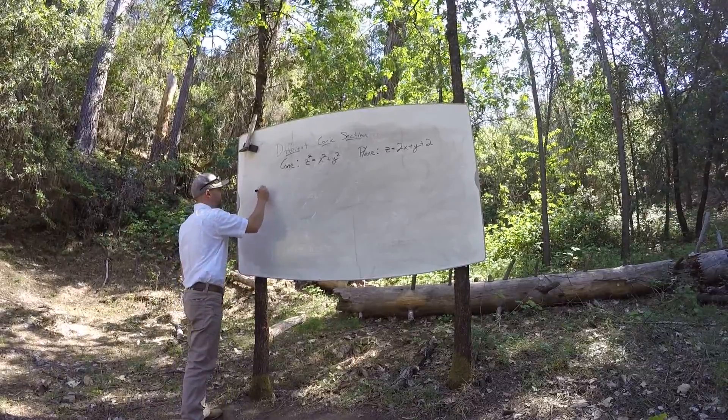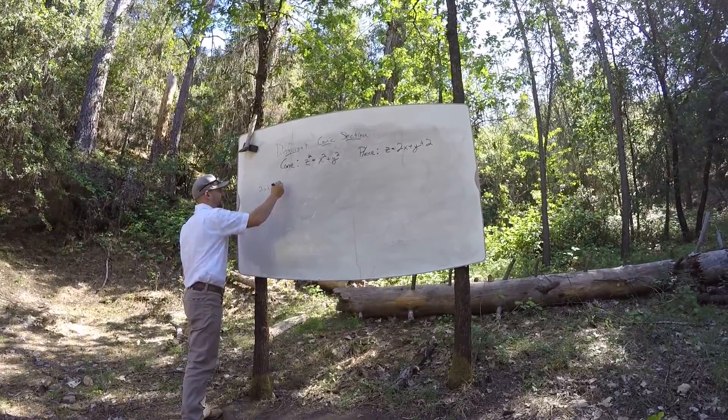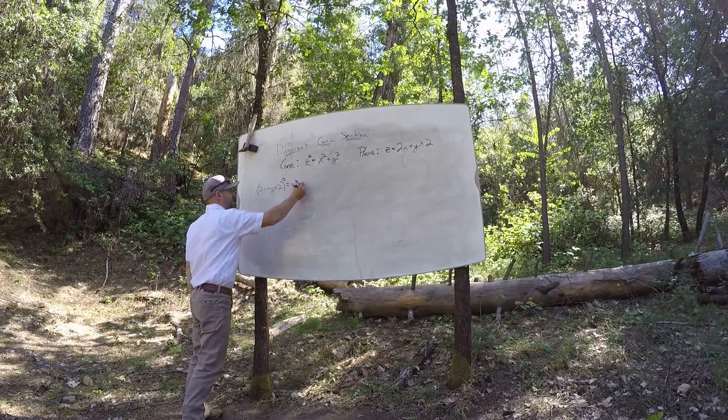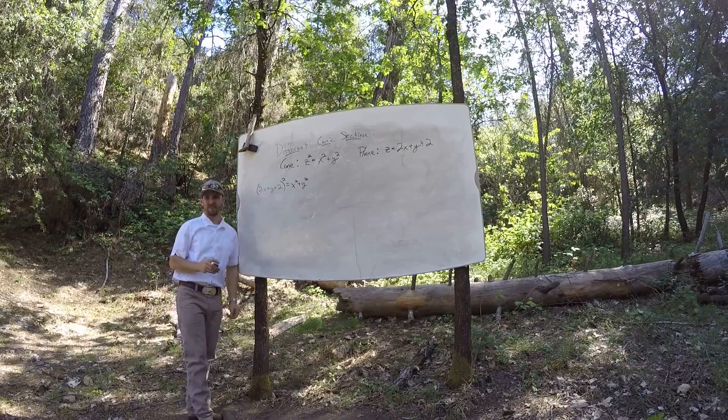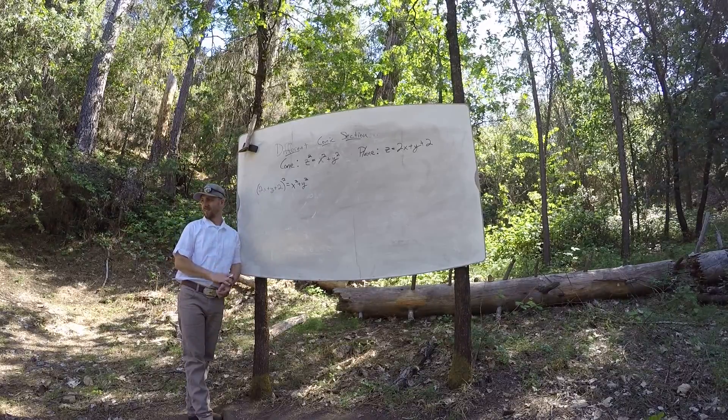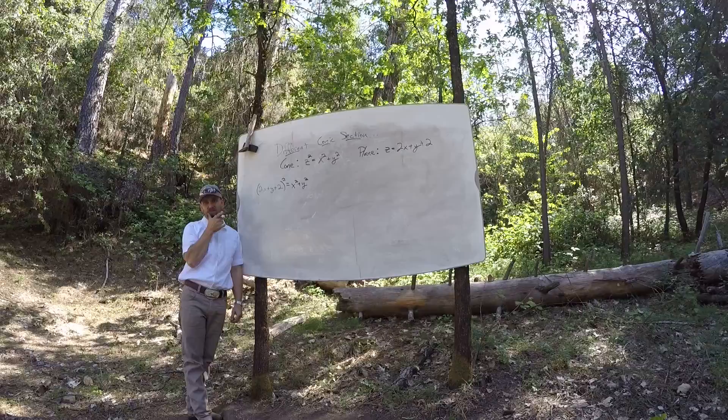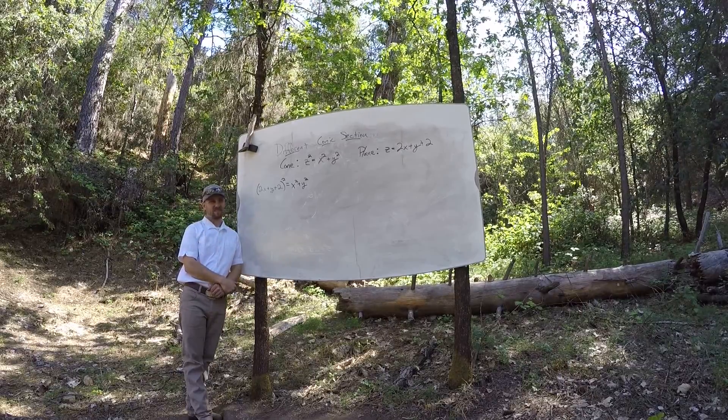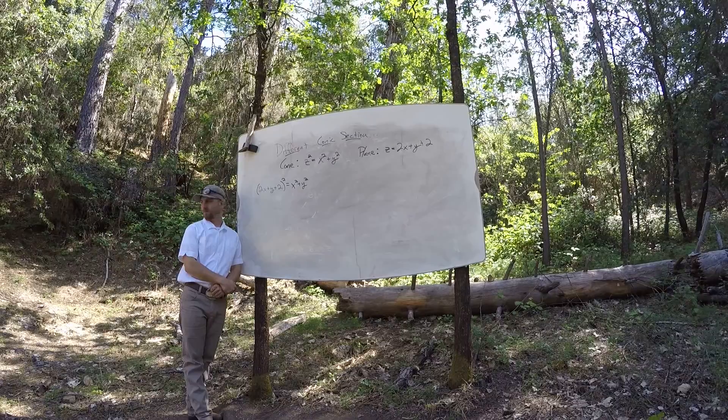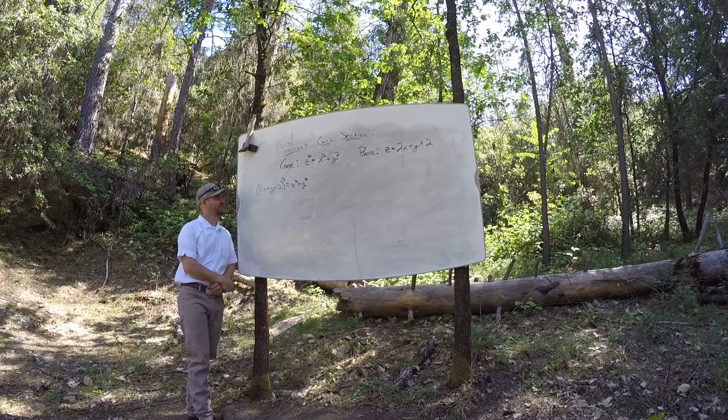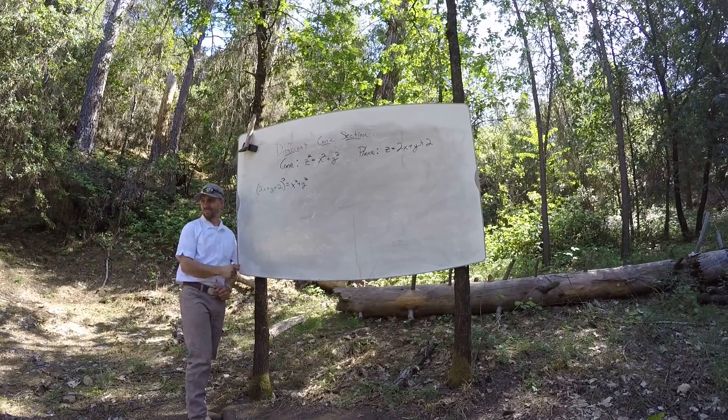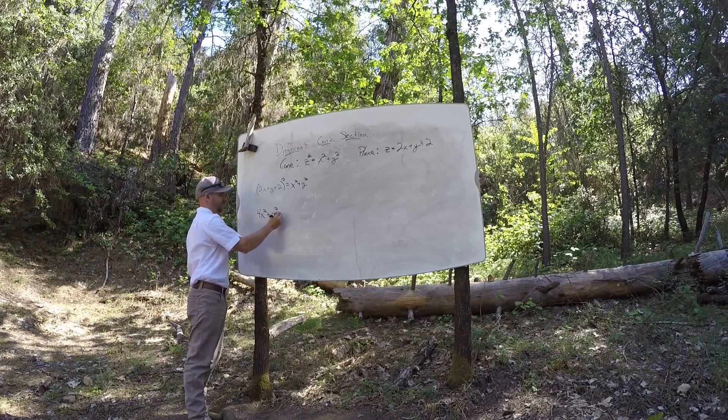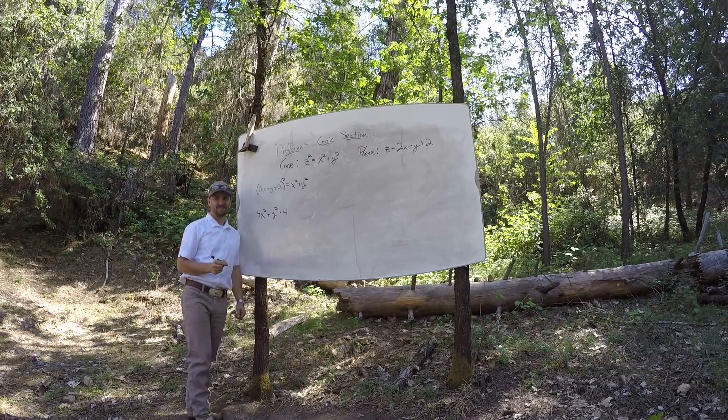Okay, so I got 2x squared plus y plus 2 squared is x squared plus y squared. Okay, and what? Foil? Foil. Okay. So, I'll do the easy part. 4x squared plus y squared plus 4.